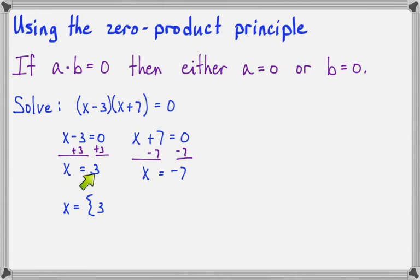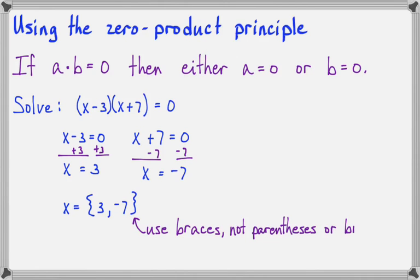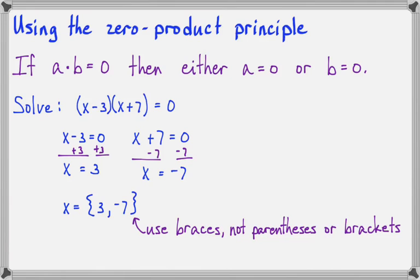So that gives us two solutions: X equals 3 and X equals negative 7. Notice how I have the solutions in curly braces — not parentheses, not square brackets, but curly braces. If we use parentheses or brackets, it begins to look like interval notation, which means all the numbers between the first one and the second one. Here we only want to specify these two numbers as solutions, which is why we need the braces.